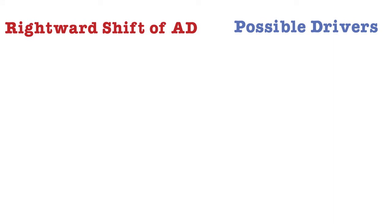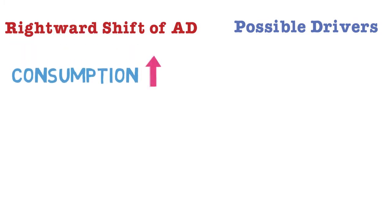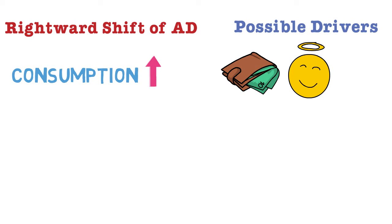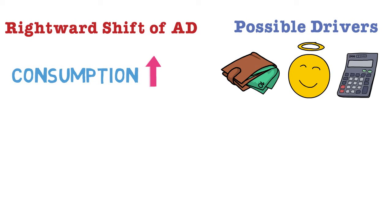What we want to look at now is what drives these rightward and leftward shifts. Starting with the rightward shift, there are five key drivers based on the components of aggregate demand. The first is consumption: if consumption increases, the AD curve shifts rightward. This can happen if consumers have more money — for example, wage levels have gone up — or if consumers become more optimistic about the future, perhaps because house prices are rising and they can borrow more. A decrease in income tax also gives consumers more take-home income, which may cause them to spend more.